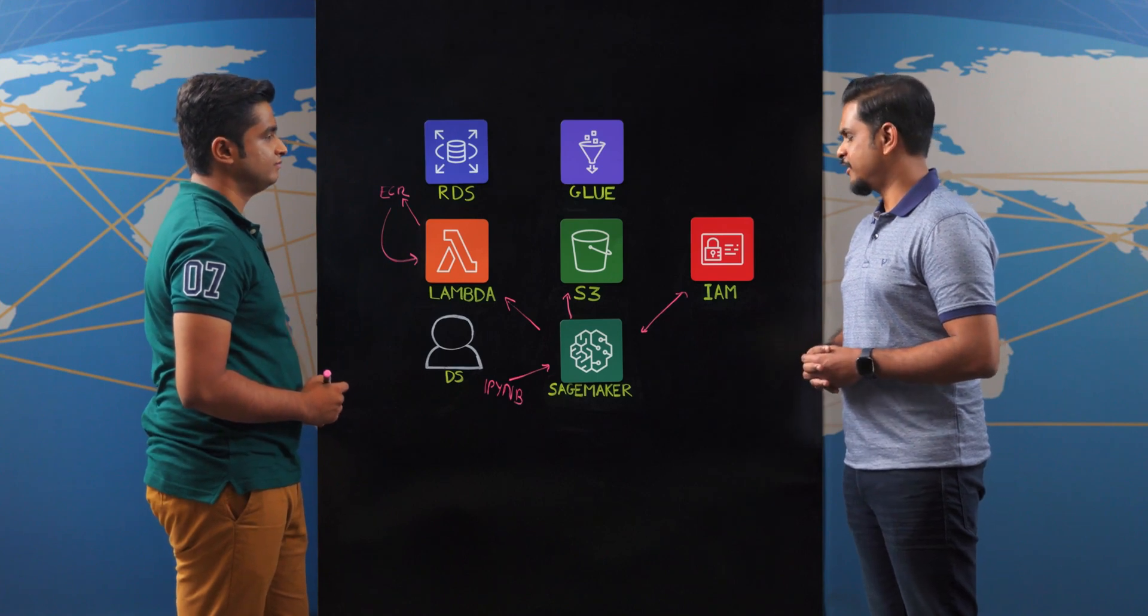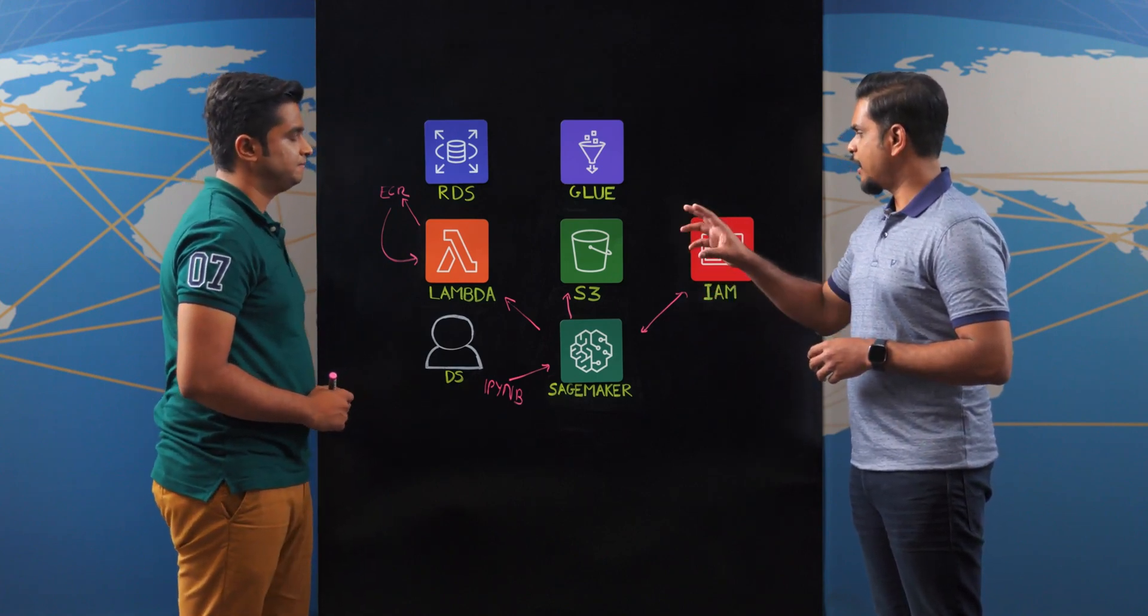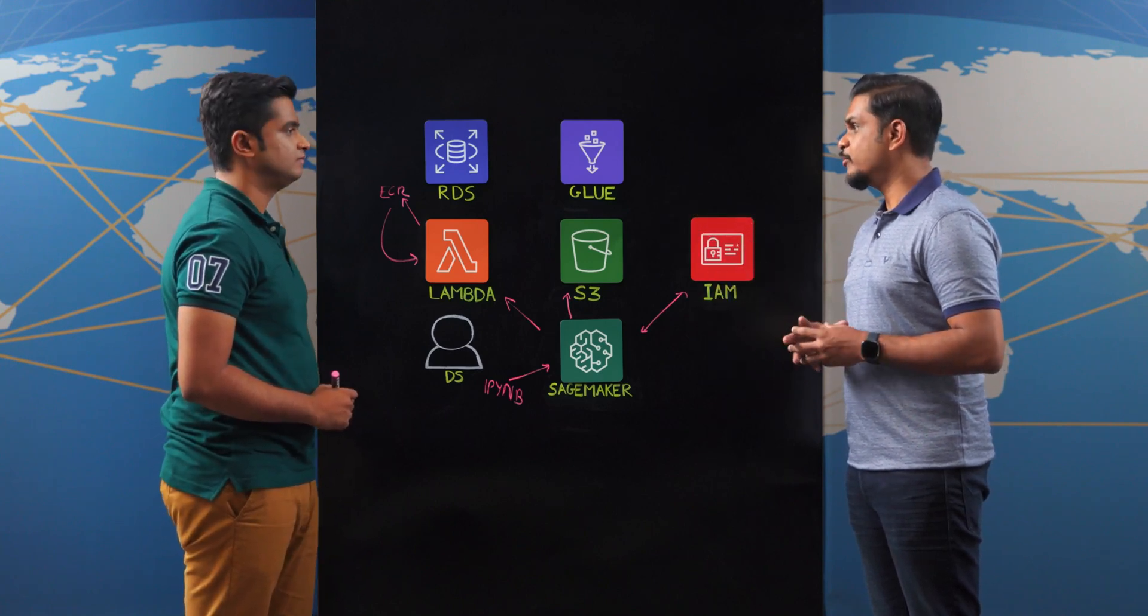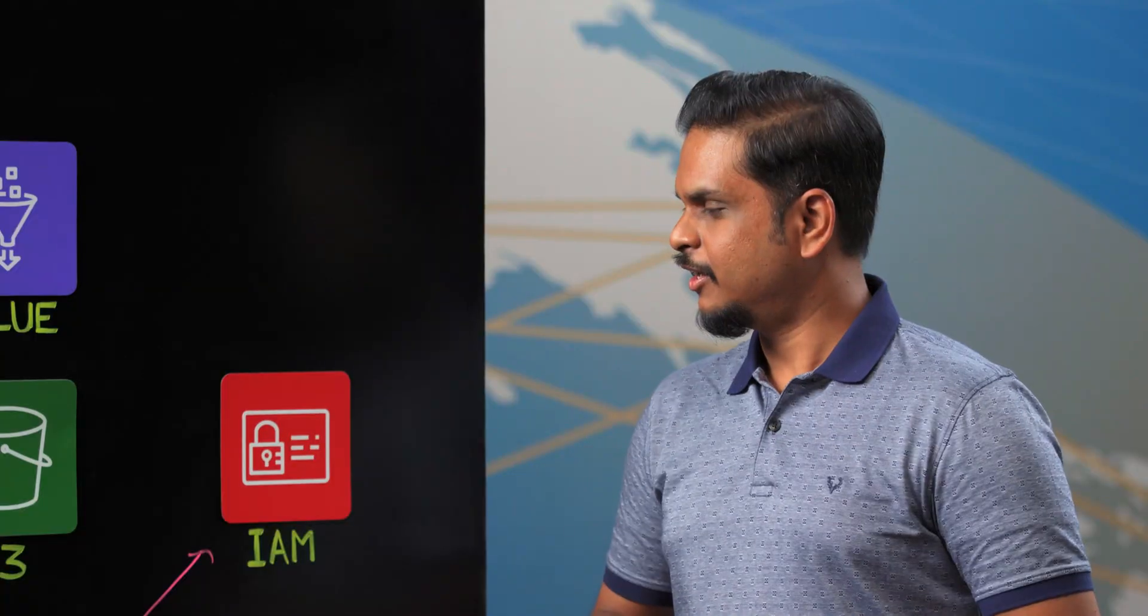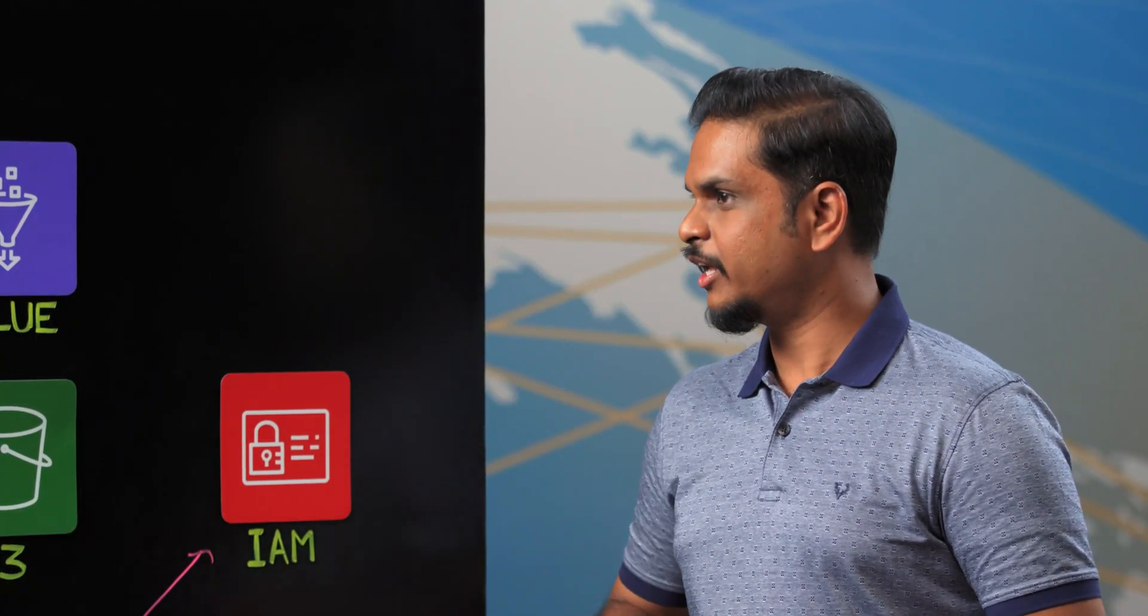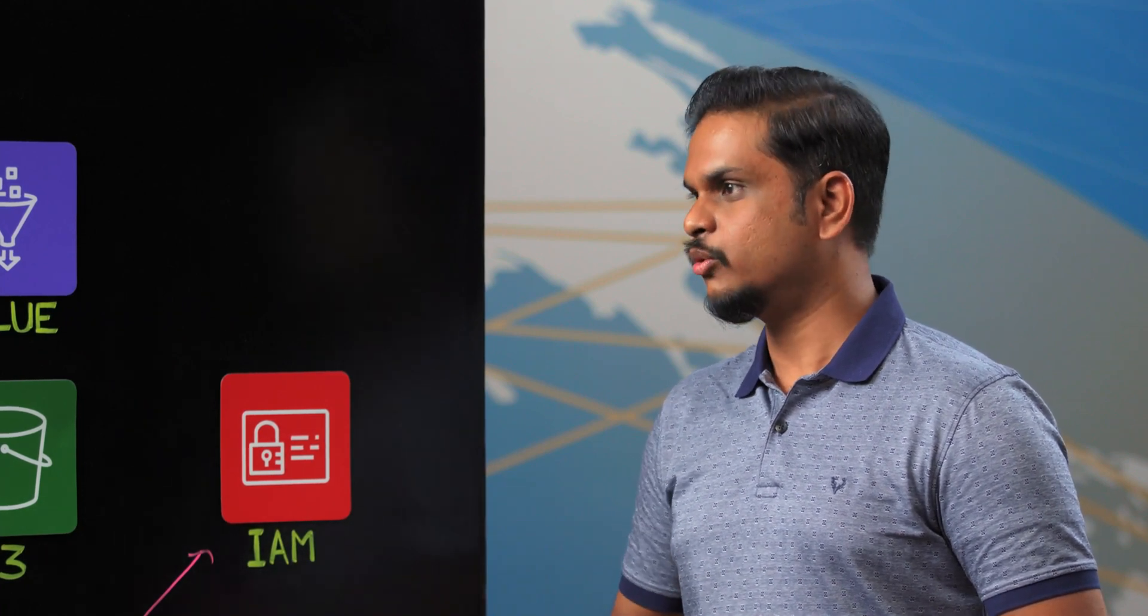Impressive automation, I should say. So you use SageMaker Studio, SageMaker Processing Jobs, Lambda and IAM to provide a scalable, secure and isolated ML workbench for your data scientists. I assume that SageMaker Processing Jobs uses the data from your data lake. Can you talk a little bit about your data lake, how it is hydrated and how do you enforce data access controls?